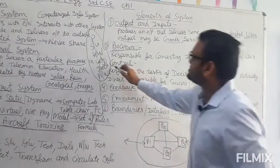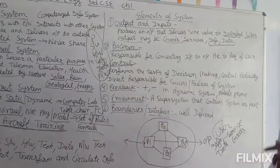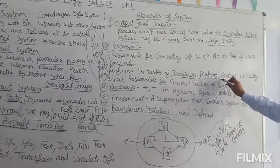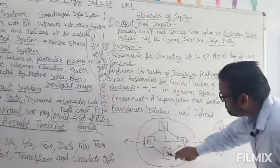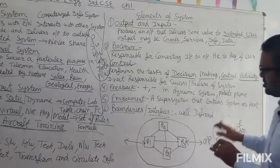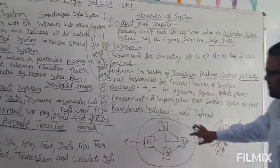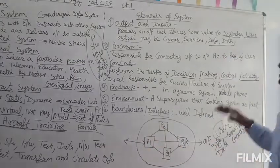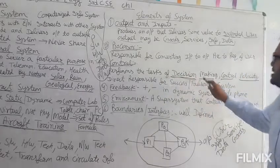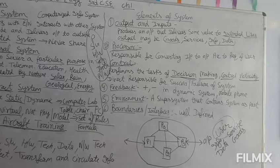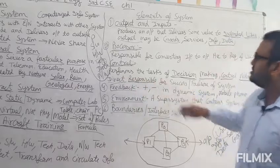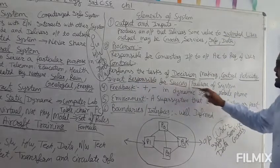The third element is control. Control performs the task of decision making. It controls the activities performed in every part of the system. Control is also directly responsible for the success or failure of a system.